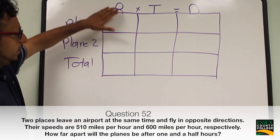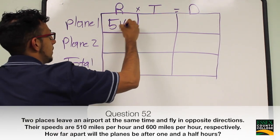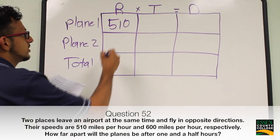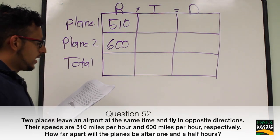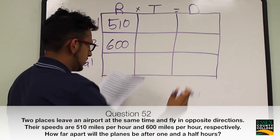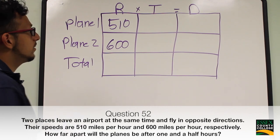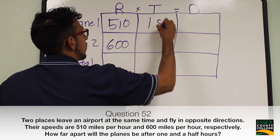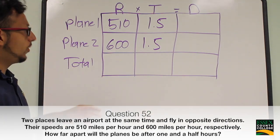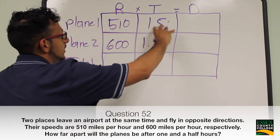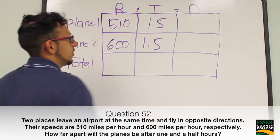They tell us the rate: the first plane is 510 and the second plane is 600. The question asks how far apart, so we are looking for distance after one and a half hours. The time given is 1.5. In this chart we can fill in the rate and the time, and for distance we are just going to multiply rate times time.